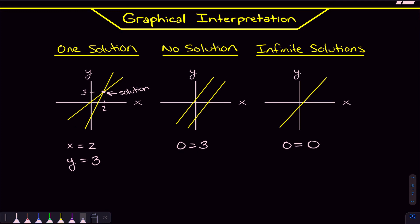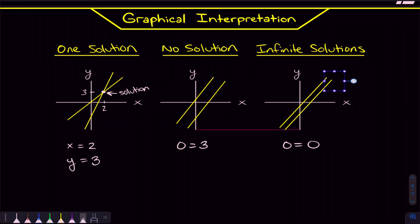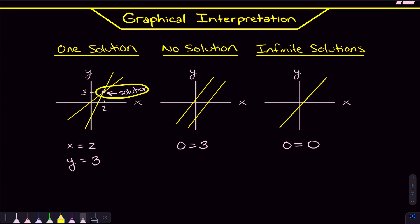For no solutions, when we get two numbers that don't equal each other and the X's and Y's go away, that's because the two lines are never intersecting — they must be parallel. When we have infinite solutions, we get two numbers that do equal each other, meaning the two lines are directly on top of each other. They're always intersecting at every single point, and that is what is meant by infinite solutions.